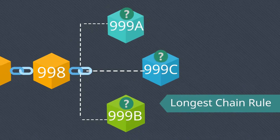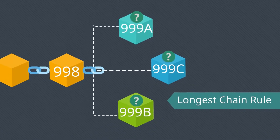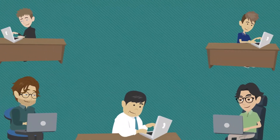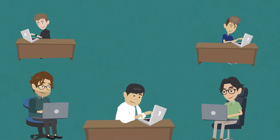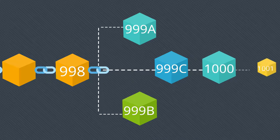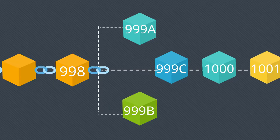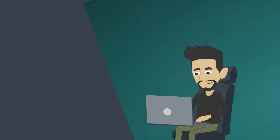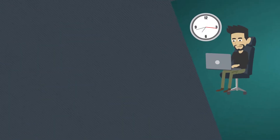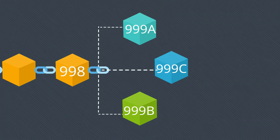Which of these blocks will form part of the valid blockchain will depend on the longest chain rule. There are other miners who are trying to create other valid blocks, and based upon the speed by which a block is created, other miners will keep on adding their blocks on top of the earlier blocks.